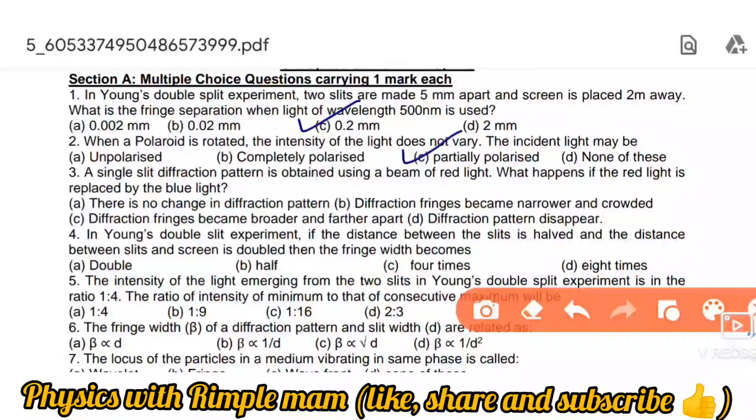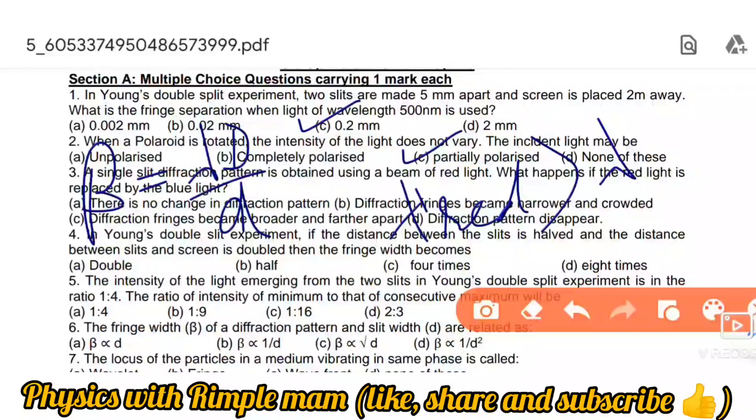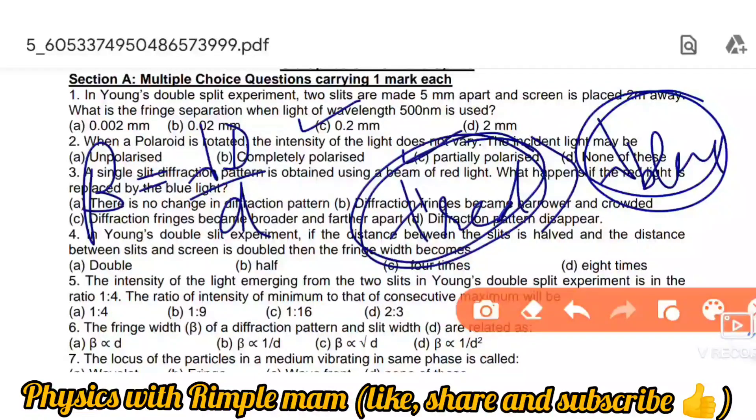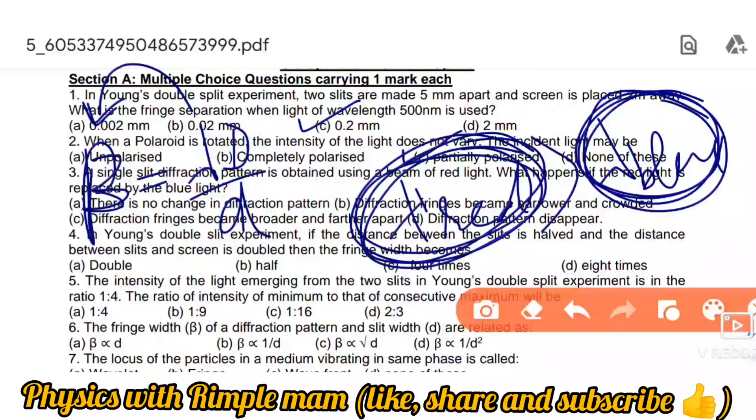Next: A single slit diffraction pattern is obtained using a beam of red light. What happens if the red light is replaced by blue light? Remember the formula: lambda D over d. Since red light has a higher wavelength than any other light, and blue has a lower wavelength than red, the fringe width will decrease. Red light has higher wavelength so fringe width is higher. If we use blue light with lower wavelength, the fringe width will also be lower.